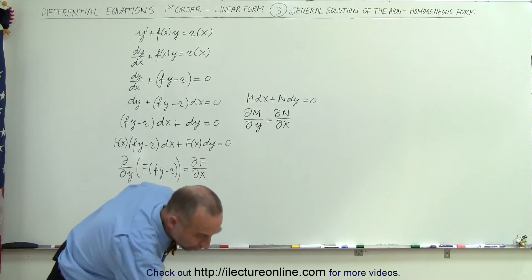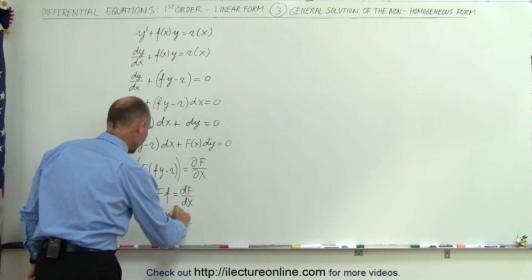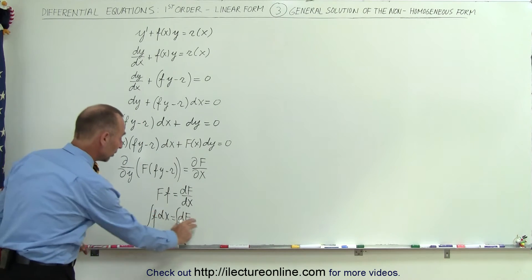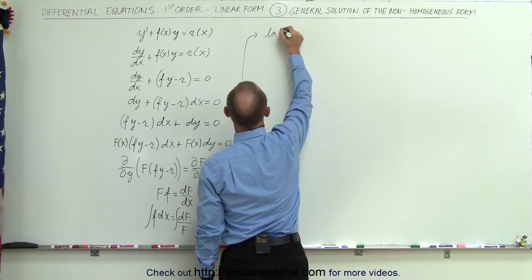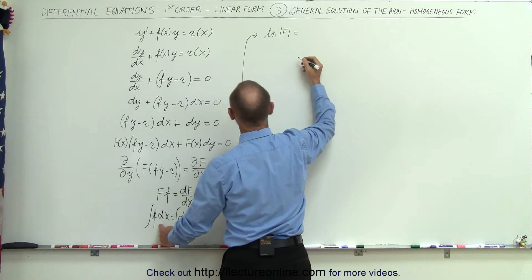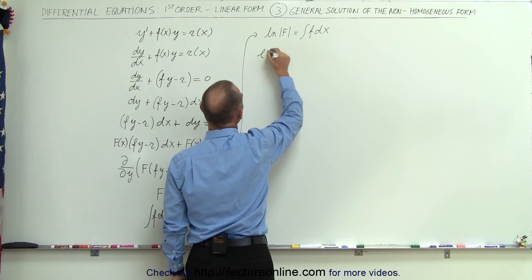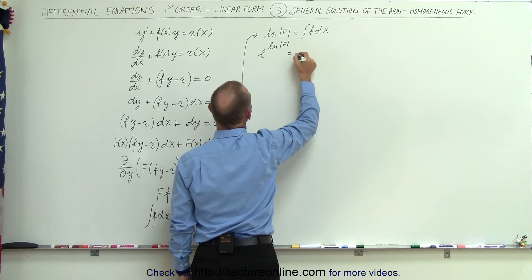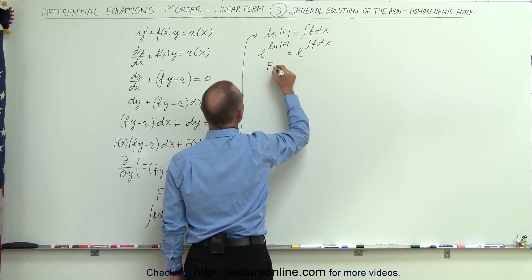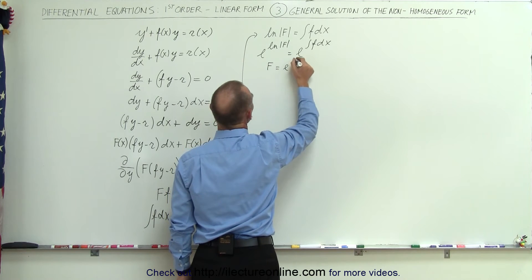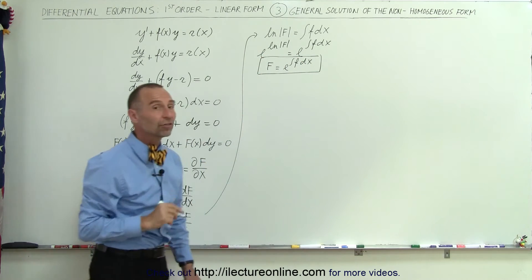Now I'm going to integrate both sides. Reversing the equation, we get the natural log of φ is equal to the integral of f times dx. Taking the anti-log of both sides, e to the natural log of φ equals e to the integral of f dx. The left side simplifies, so the integrating factor φ is simply equal to e raised to the integral of f times dx.